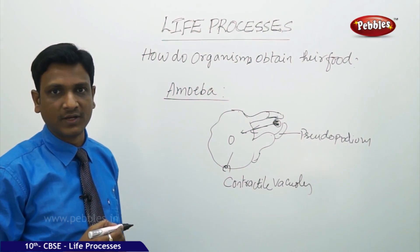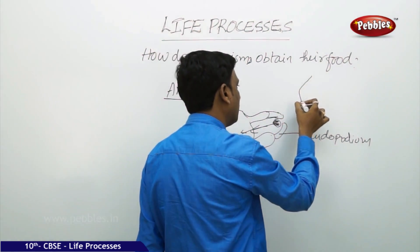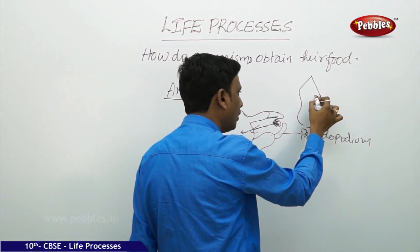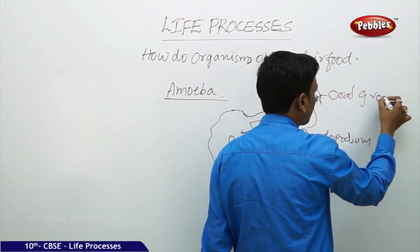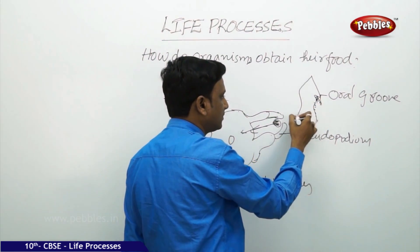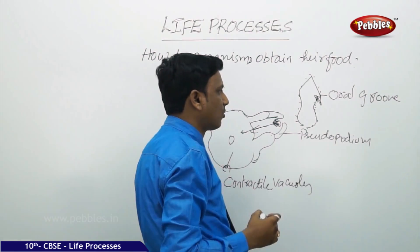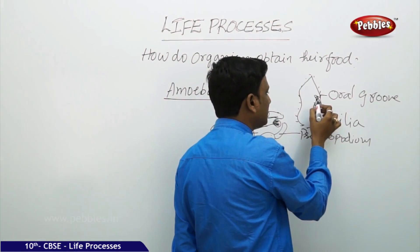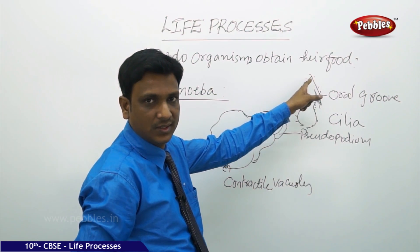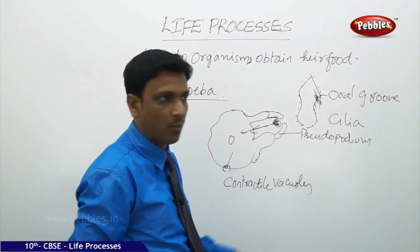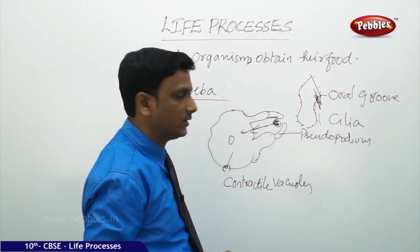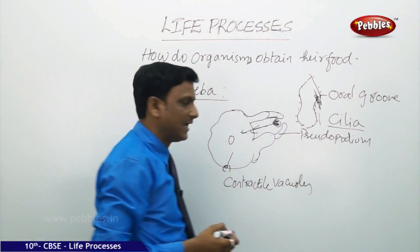Another unicellular organism is paramecium, also called a slipper animalcule because of its slipper shape. It has a special groove called the oral groove, which has hair-like structures called cilia both on its body and inside the groove. As the paramecium moves through water, currents cause the food to move into the oral groove where it gets trapped and is engulfed into the body. The cilia help paramecium to move and obtain its food.